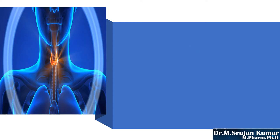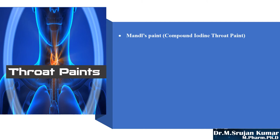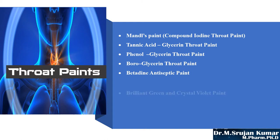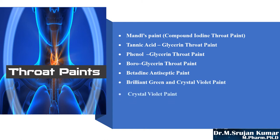Next, moving on to the available throat paints: Mandel's paint, which is a commonly used throat paint also called compound iodine throat paint; tannic acid glycerin throat paint; phenol glycerin throat paint; boro glycerin throat paint; betadine antiseptic paint; brilliant green and crystal violet paint; crystal violet paint; and coal tar paint. These are the available throat paints.